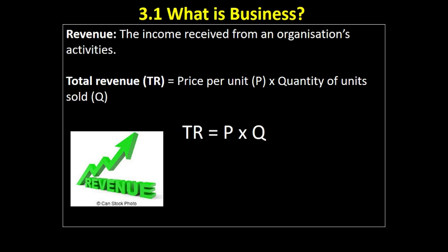Let's break that down a bit further and look in more detail at revenues and costs. First, revenue is defined as the income received from an organisation's activities. You'll sometimes also see it called turnover, sales turnover, sales revenue, or simply sales — lots of different words, but they all mean the same thing: the money an organisation gets from selling its products. We calculate it by taking the price per unit and multiplying by the quantity of units sold, giving us the formula: Total Revenue = P × Q, or TR = P × Q.